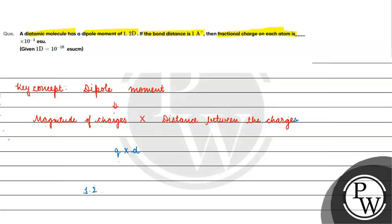We have dipole moment μ = q × d. The value given is 1.2 D. We convert this to esu·cm: 1 D is equal to 10 raised to the power minus 18 esu·cm, so 1.2 D equals 1.2 × 10⁻¹⁸ esu·cm. The bond distance d is 1 angstrom, which is 10⁻⁸ cm.